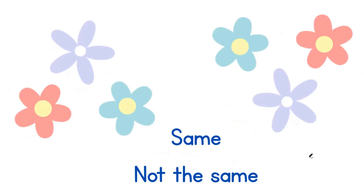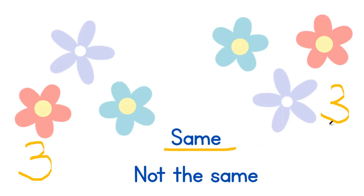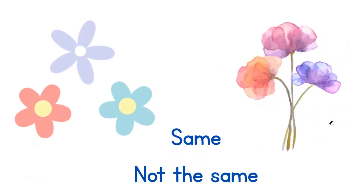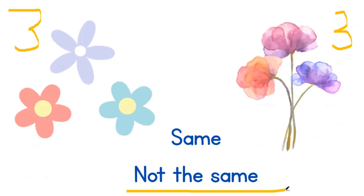Here we have flowers. On our left-hand side, we have 3 flowers. On our right-hand side, we also have 3 flowers. Are they the same flowers? Yes, they are. Are they the same number? Yes, they are. Are they placed differently? Yes, they are. So what is our answer — same or not the same? Great job! It is the same. Now let's look at these flowers. We have 3 flowers on the left and 3 flowers on the right. That's the same number. But are they the same flowers? No, they are not the same flowers. So they are not the same.